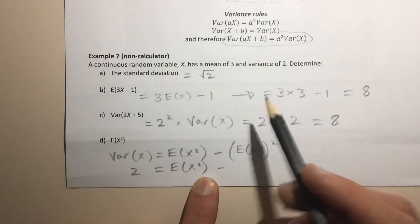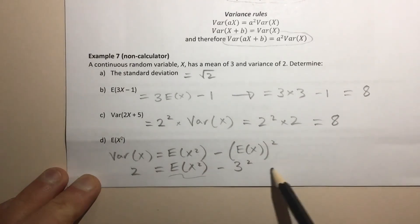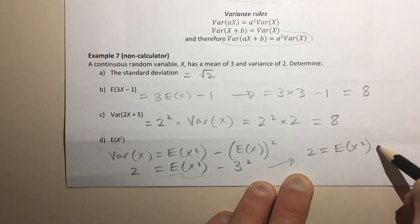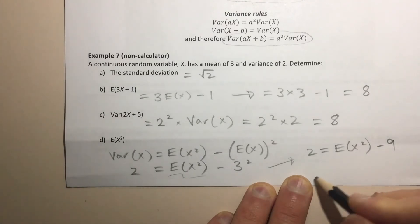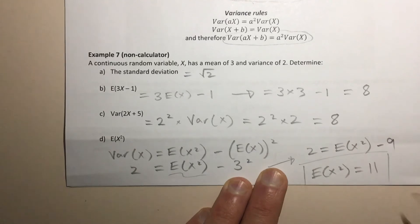The expected value of X² is what we're trying to find, but we know from the information in the question that the mean, or the expected value, is 3. So this is just 3² here. And now you can actually just solve this equation for the expected value of X². That would be, 2 = E(X²) - 9, and if you add 9 to both sides, you'll get E(X²) = 11.